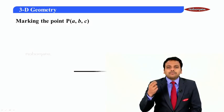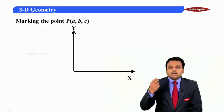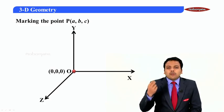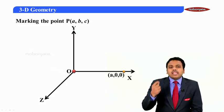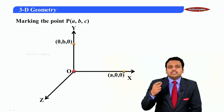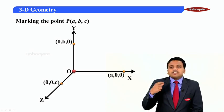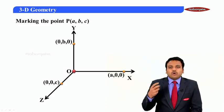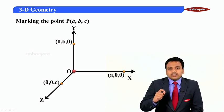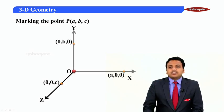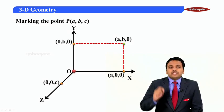To construct a cuboid, we take our x-axis, y-axis, and z-axis with origin (0, 0, 0). We mark (a, 0, 0) on the x-axis, (0, b, 0) on the y-axis, and (0, 0, c) on the z-axis. Then from the x-axis and y-axis points we drop two perpendiculars, and they meet at point (a, b, 0).